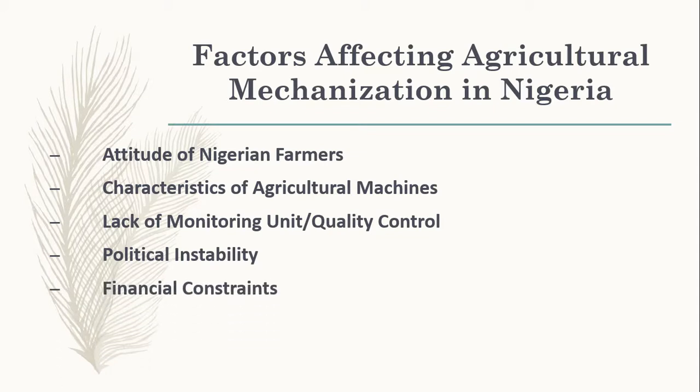Number five, financial constraint. This is also a major problem of agricultural development because most of our farmers don't have money, and agriculture requires money to ensure all aspects of farming are carried along within a possible time. Number six, illiteracy — most farmers have no knowledge. These are the factors affecting agricultural mechanization in Nigeria.